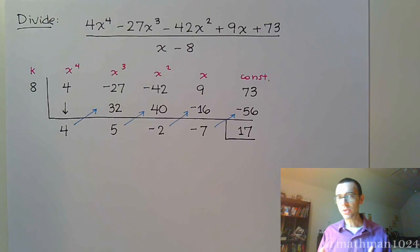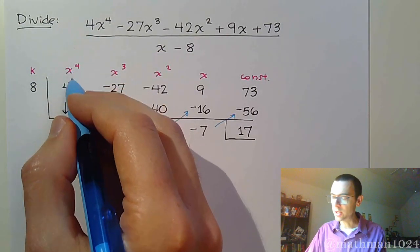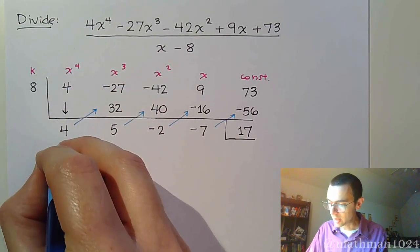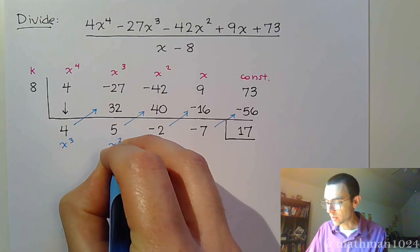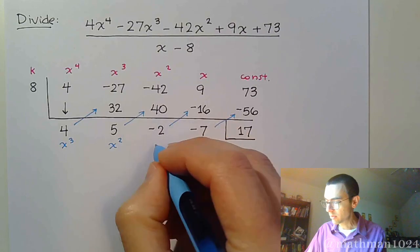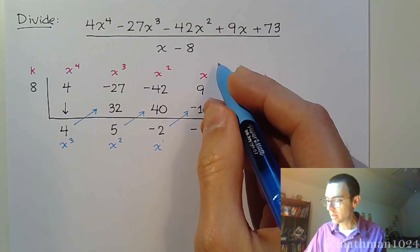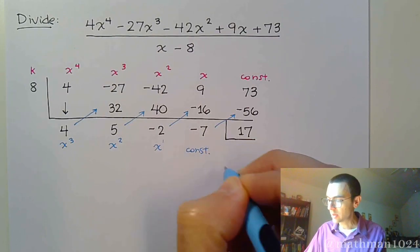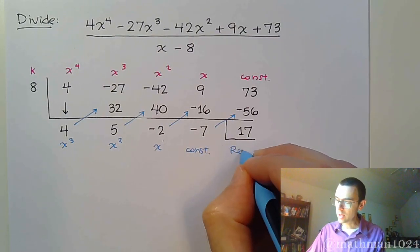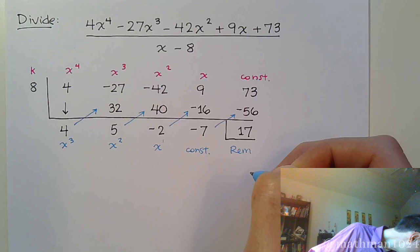So, as we mentioned with synthetic division, you're going to lose a degree for each of these guys. So this is now going to be the column for x to the 3rd. And then it goes from 3 to 2, from 2 to 1, from x to just being the constant. And then here is the remainder.